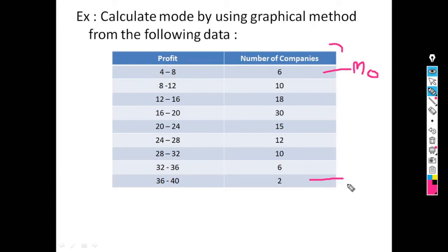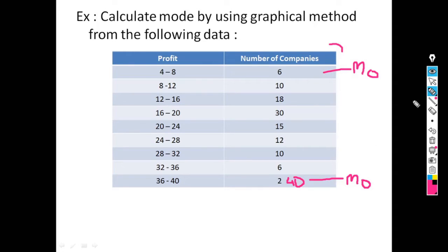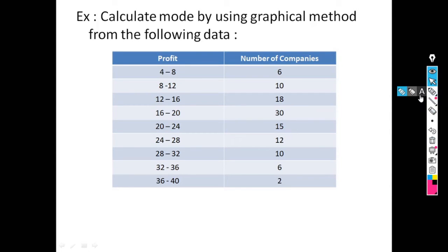Similarly, if the last class is the modal class — suppose its frequency is 40 — then we cannot define the post-modal class, meaning the class just after the modal class. So in that case, we cannot calculate the mode of that distribution. This is a drawback of mode.